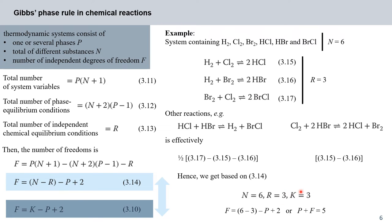In total we have N equals 6, number of independent chemical equilibrium conditions R equals 3, and K equals 3. Plugging into F equals N minus R minus P plus 2 gives F equals 6 minus 3 minus P plus 2, or separating variables and constants: P plus F equals 5.